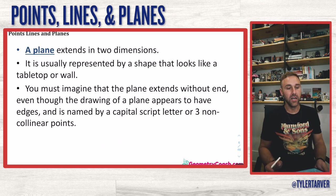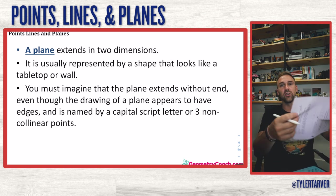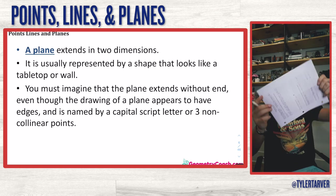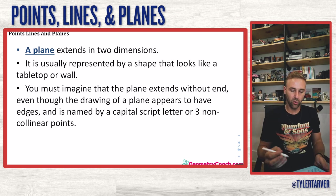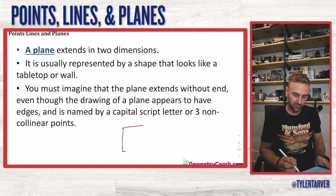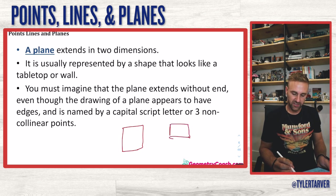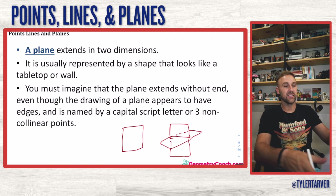A plane — you need at least three coordinates to make a plane, and a plane essentially looks like a piece of paper in the air. It extends in two dimensions and is usually represented by a shape that looks like a tabletop or a wall. If you have two planes that overlap, that would be like two planes intersecting.